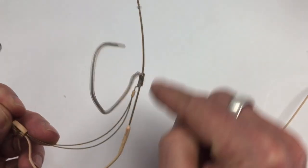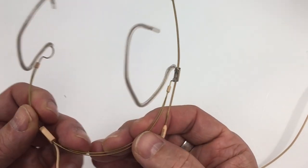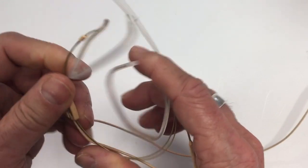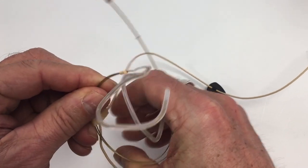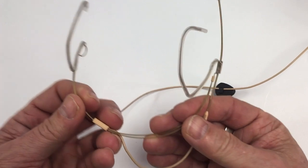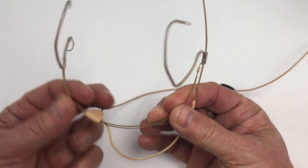Make sure you don't bend the actual microphone here. You could take it off, but you don't have to. Then bend the curve around the same way. Now I have the same curve on both sides.